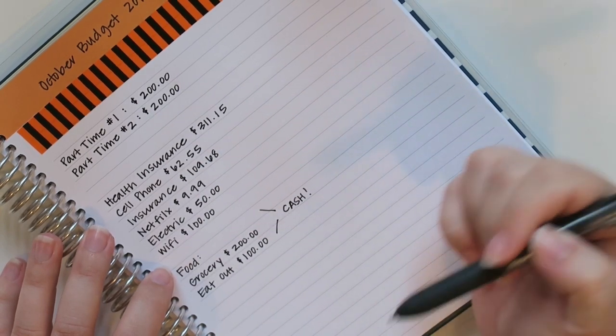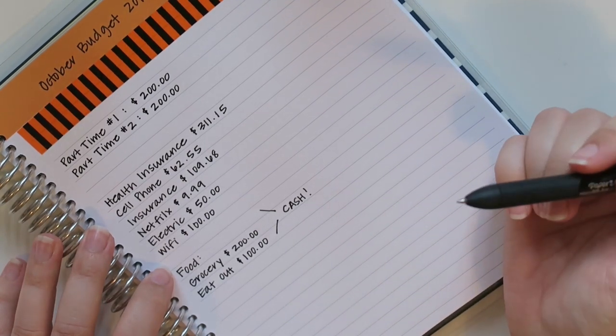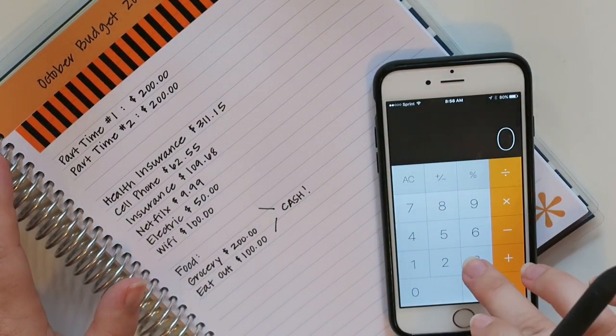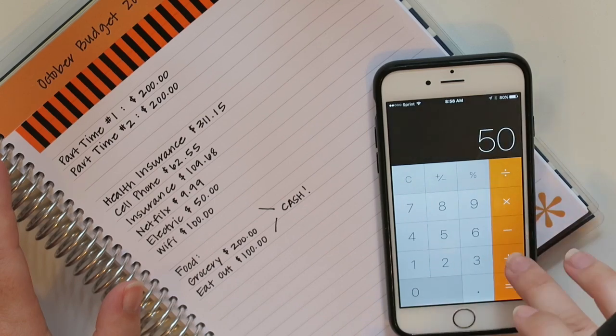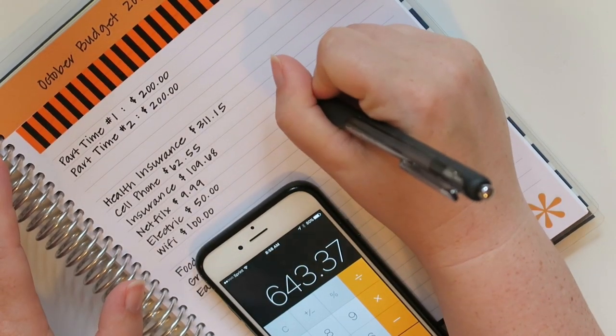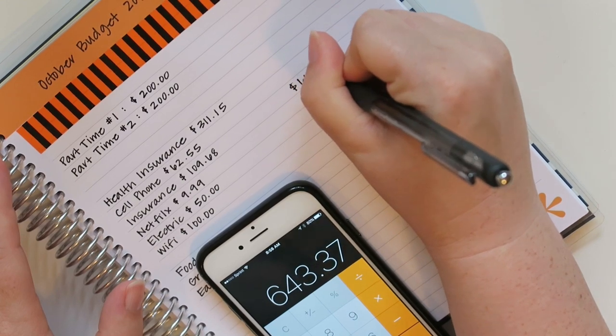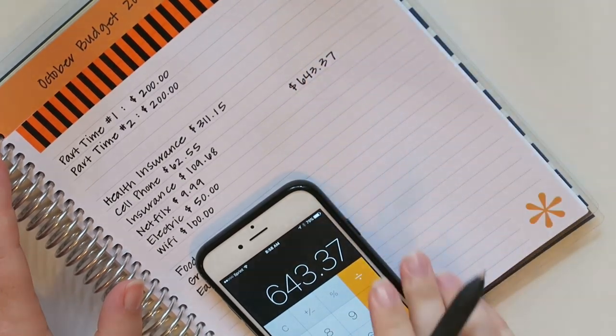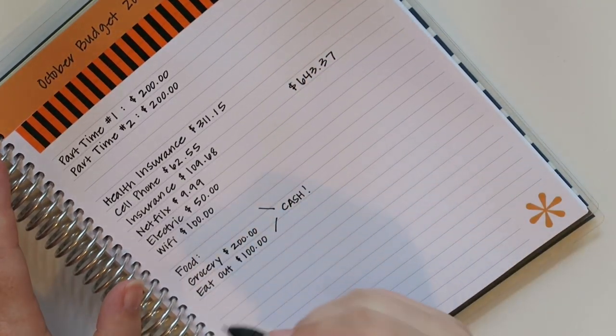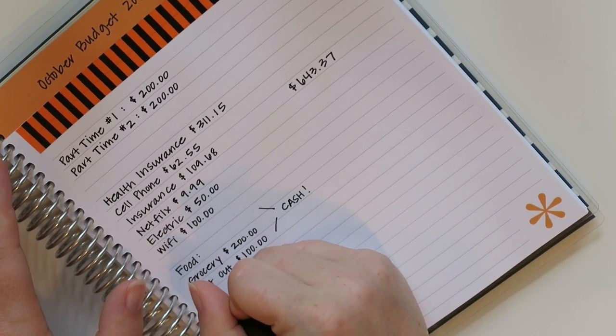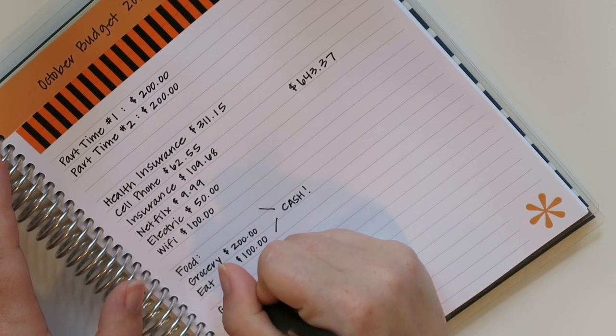So let's get this all totaled up and let's see what we got for the totals here. So just to cost me to live is going to be $643 and 37 cents. Minus the food. Oh, you know what I should also put is gas for my vehicle.